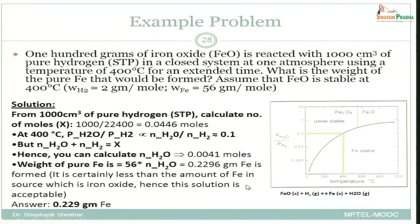We need to find the number of moles of H2 and H2O at equilibrium. From 1000 cm³ of pure hydrogen at STP, the total number of moles is calculated to be 0.0446 moles. We then look at the equilibrium diagram at 400°C, where both Fe and FeO can coexist, to find the ratio of partial pressures pH2O/pH2 = 0.1.